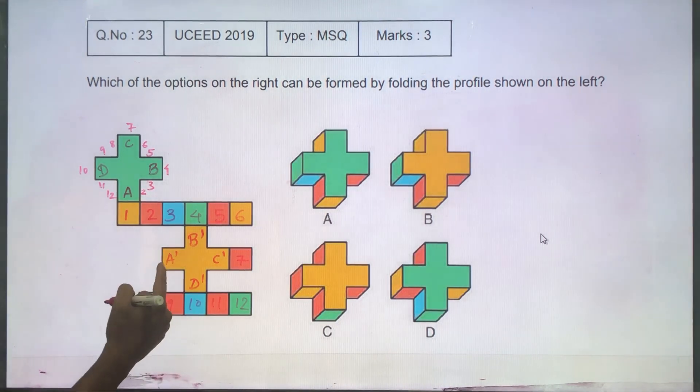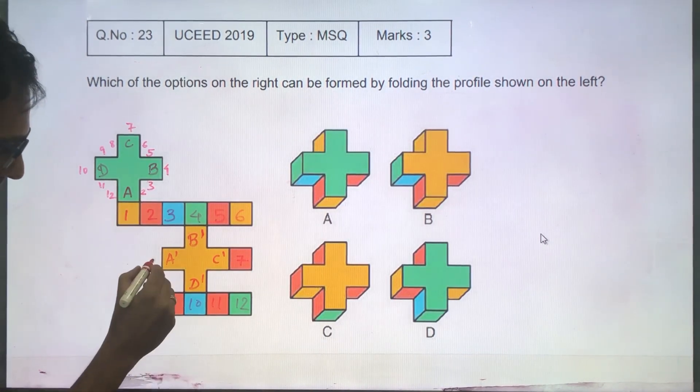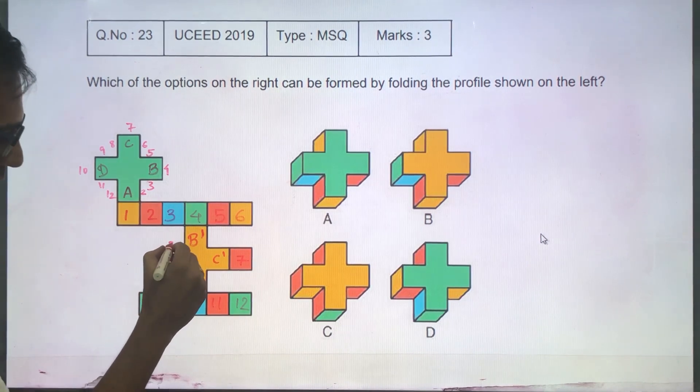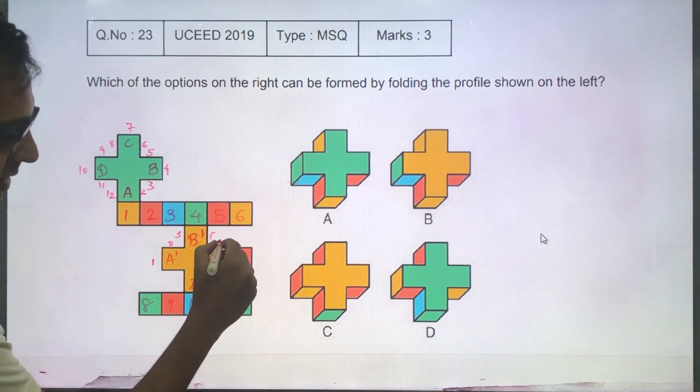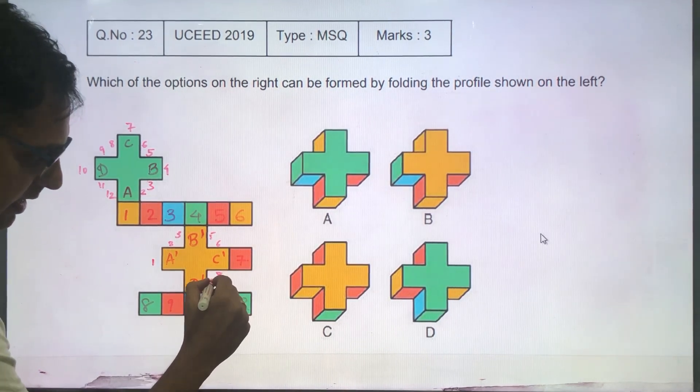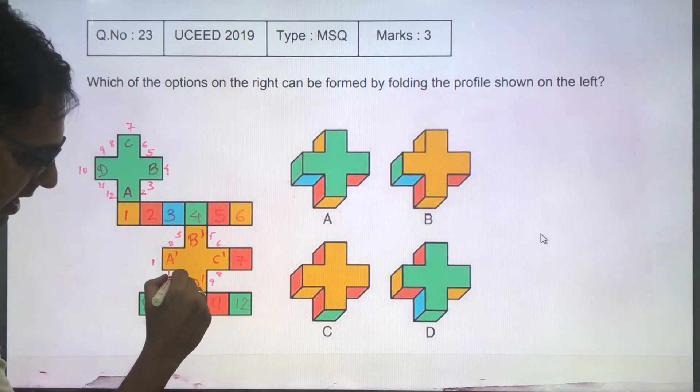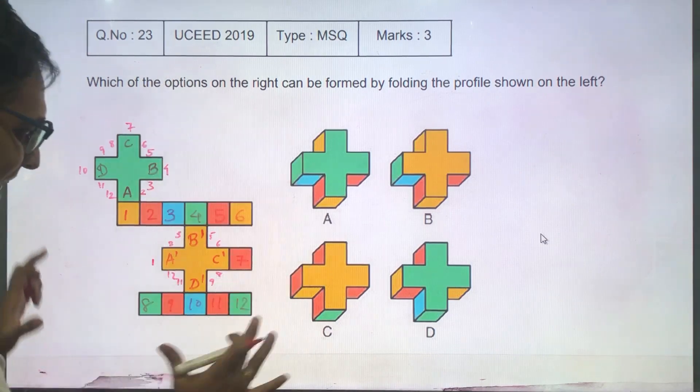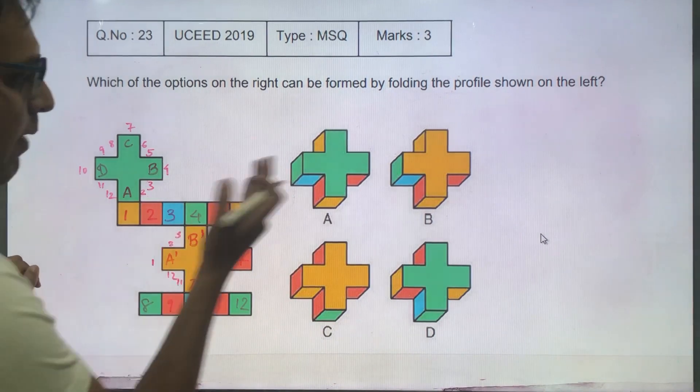Alright? Similarly, what will be here at A: 1, 2, 3, 4, 5 will come here, 6, 7 is here, 8, 9, 10 is here, 11 and 12. That's how this is easy to understand which color will go next to which particular side.